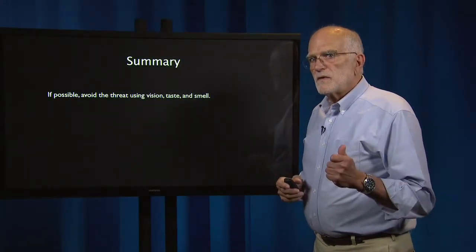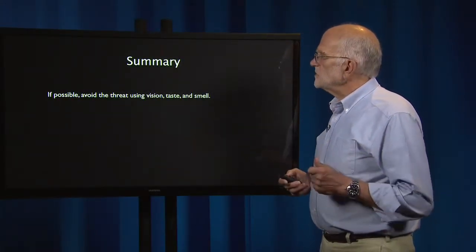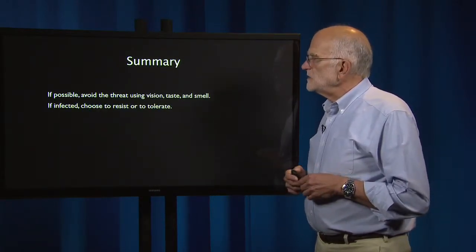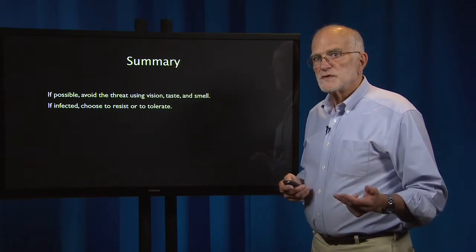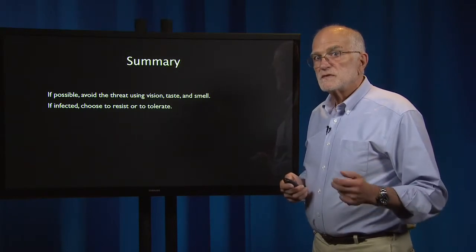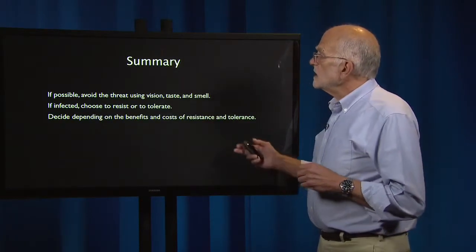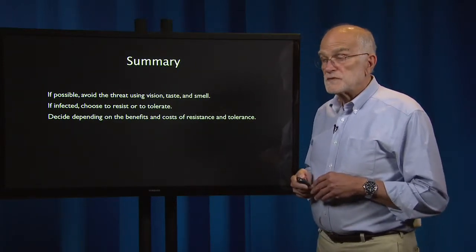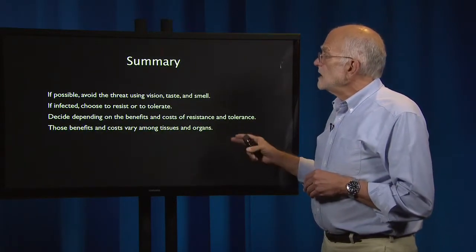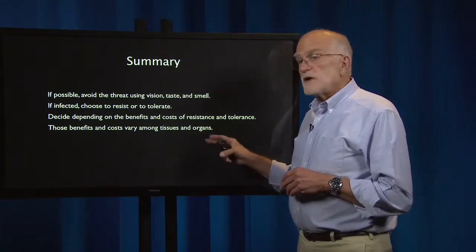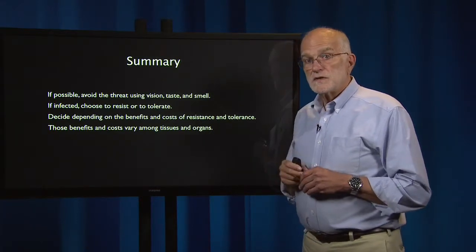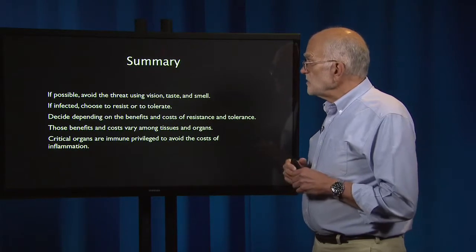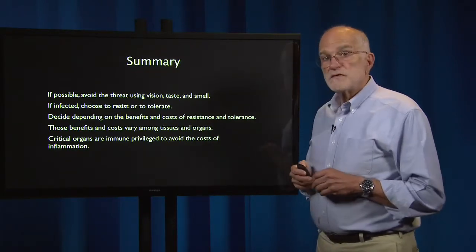To summarize: defense priorities state that if possible, avoid the threat using vision, taste, and smell. If infected, one must make a choice to resist or to tolerate, making that decision depending on the costs and benefits of resistance and tolerance. These costs and benefits vary among tissues and organs, and the critical organs are immunoprivileged to avoid the cost of inflammation.